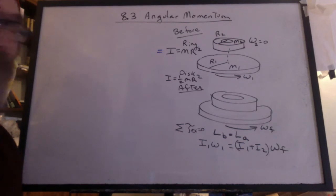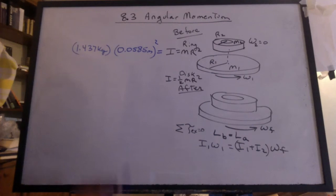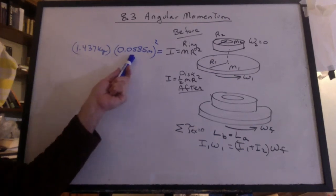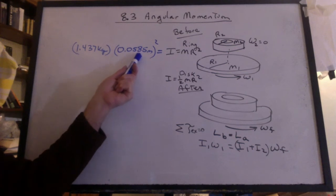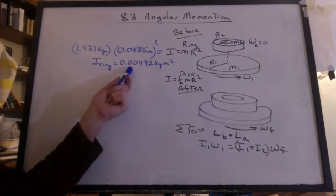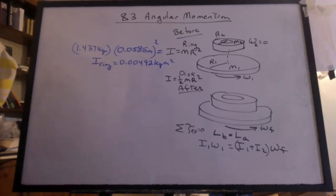Let's get some data up here. First, we'll find the inertia of the ring. The mass is 1.437 kilograms. And the radius is half the diameter. I've converted it to meters. 0.0585 meters. I get I for the ring. 0.00492 kilogram meter squared.